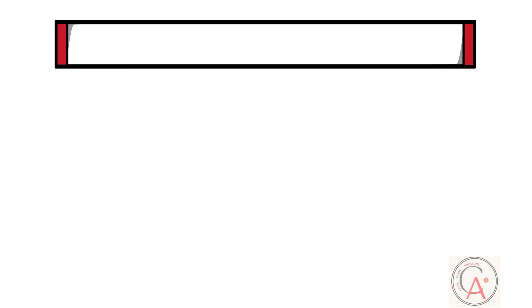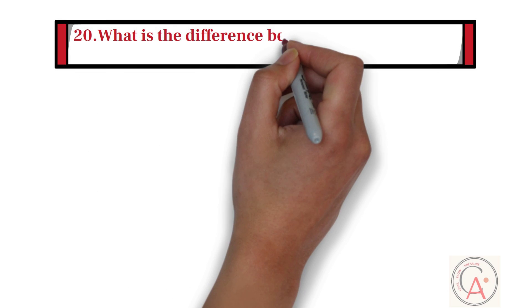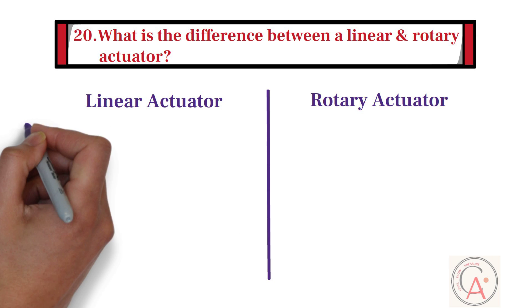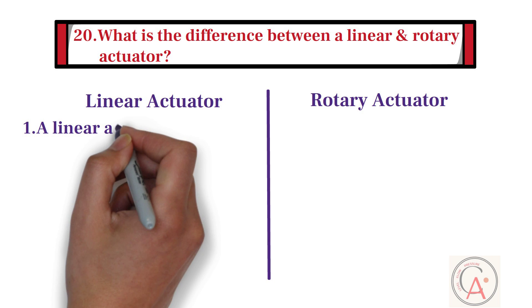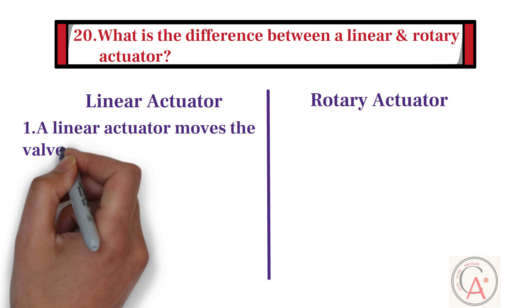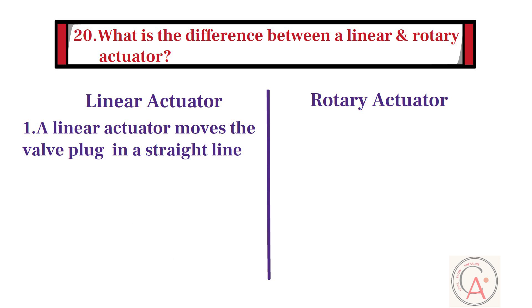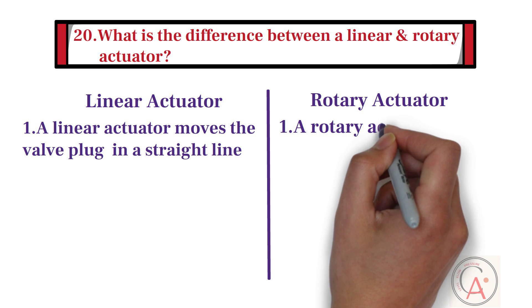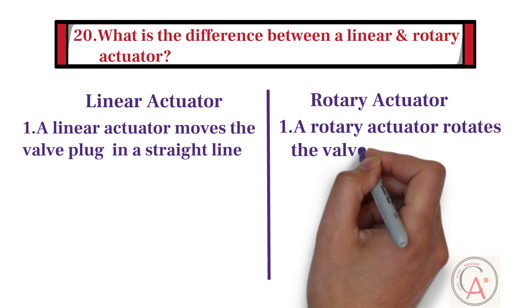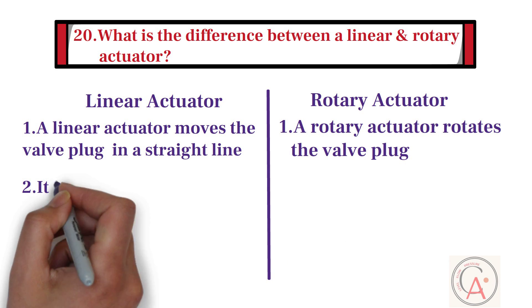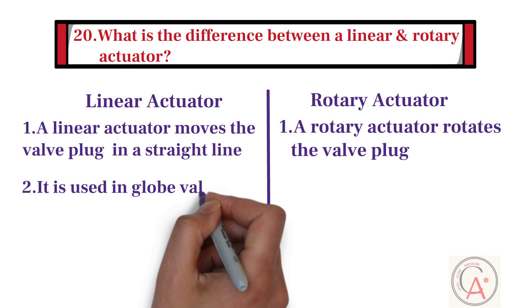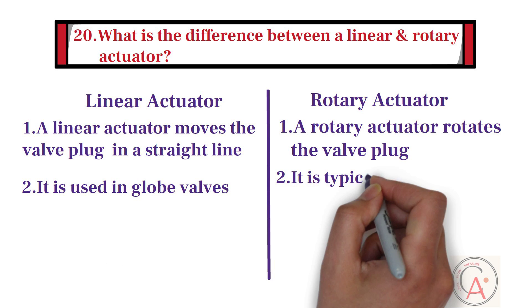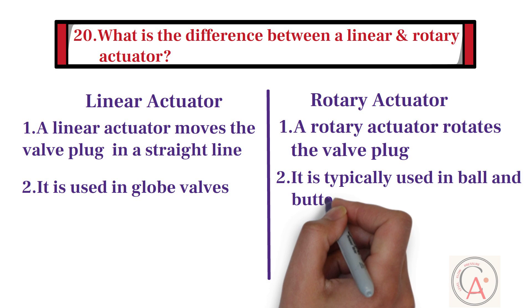Twentieth question: what is the difference between a linear and rotary actuator? A linear actuator moves the valve plug in a straight line, while a rotary actuator rotates the valve plug. Linear actuators are generally used in globe valves, while rotary actuators are typically used in ball and butterfly valves.